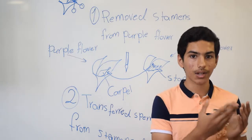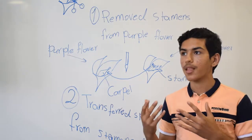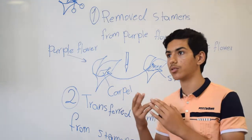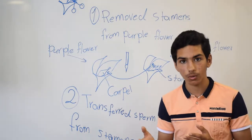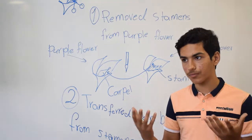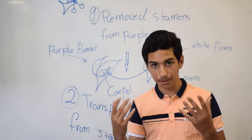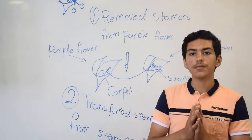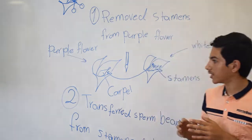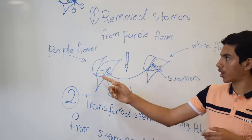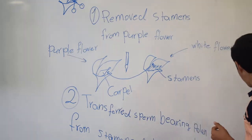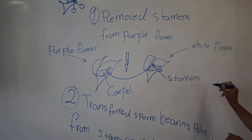For example, we have a type of pea plant that has a red flower, or we have a flower that has a purple color, or white color, or pink color. We have many different types. And we have parts of the pea plant, for example a stamen or carpel.